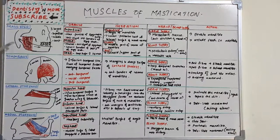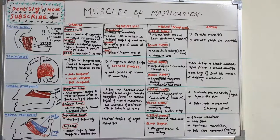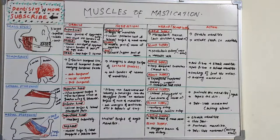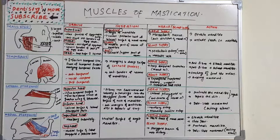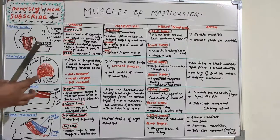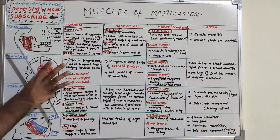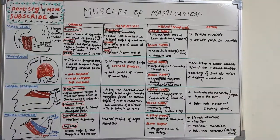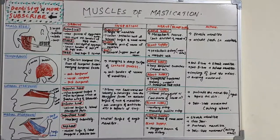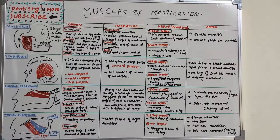Now we move to the temporalis muscle. The name itself tells us it is mainly on the temporal bone. It is a fan-shaped muscle that covers the temporal region. It is the largest masticatory muscle but not considered the most powerful. Its origin is from the inferior temporal line, the floor of the temporal fossa, and the overlying temporal fascia.